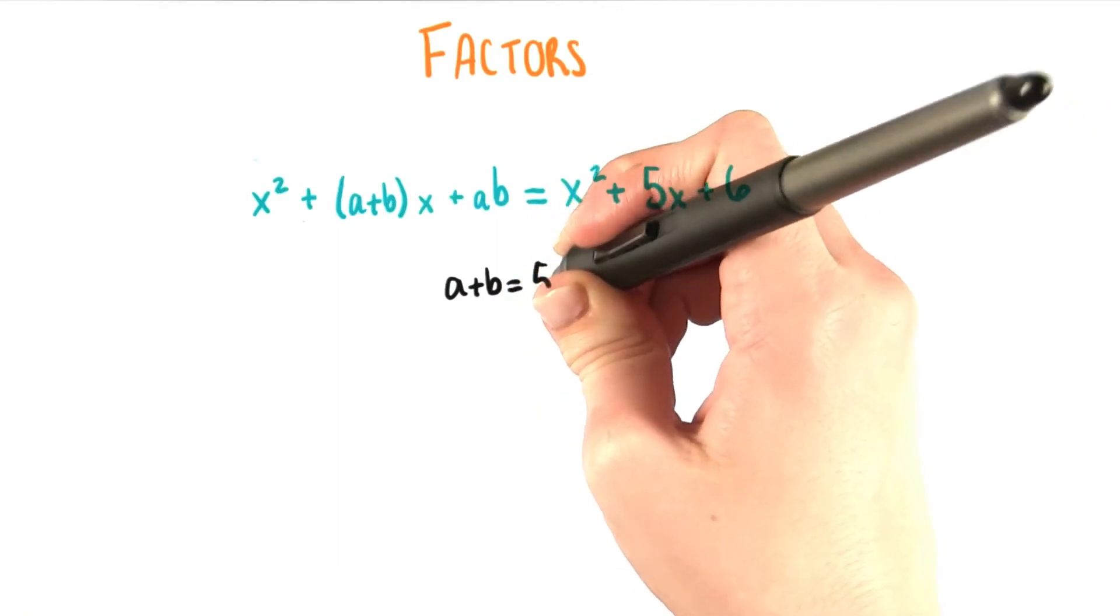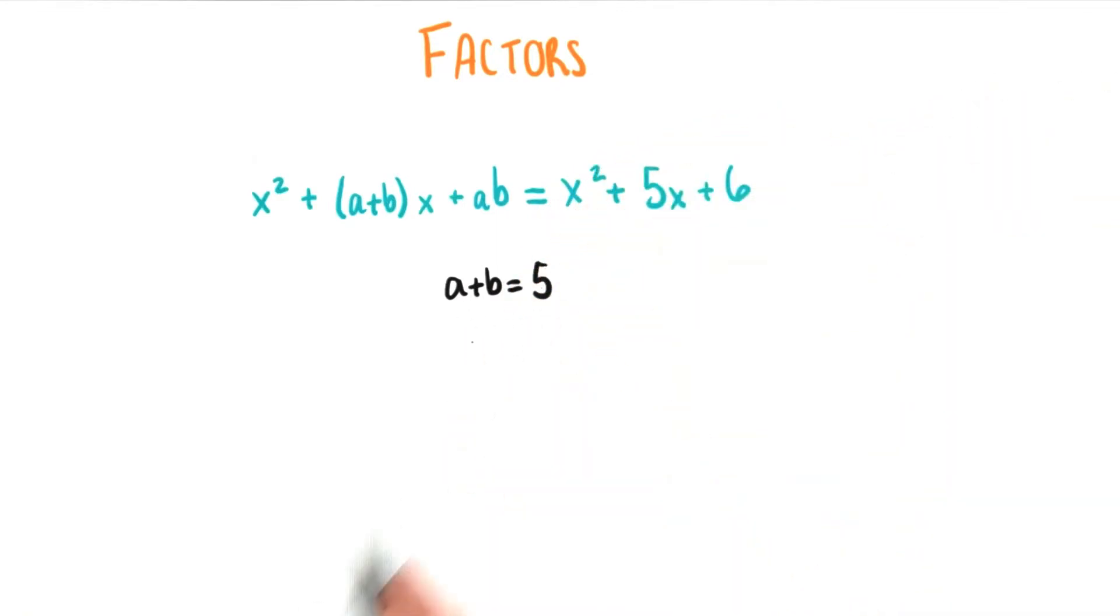If this is the case, then we must have a plus b equals 5 since these are the corresponding coefficients of the x to the first terms.